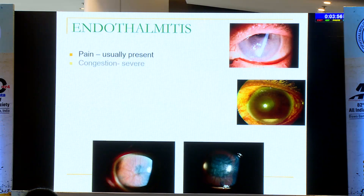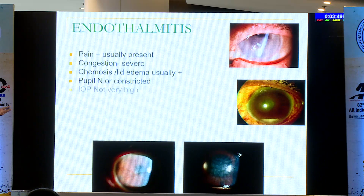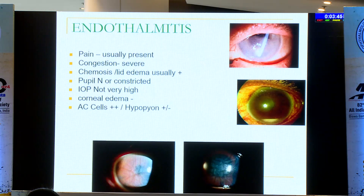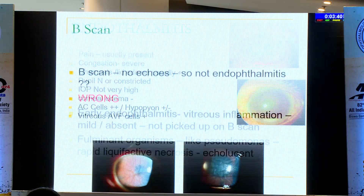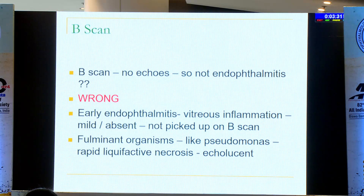In endophthalmitis, the patient usually has pain, congestion is severe, and normally chemosis and lid edema are present. The pupil is not dilated — normal or constricted. IOP is not very high, and corneal edema won't be there. Even in these cases, they might not have hypopyon, but vitreous cells will be there. Do a B-scan — even if it is anechoic, it doesn't mean that it is not endophthalmitis.